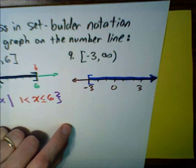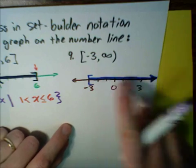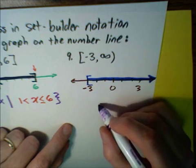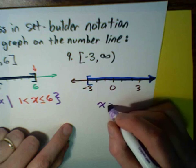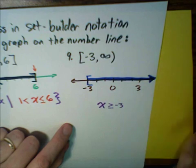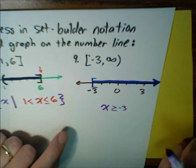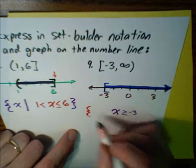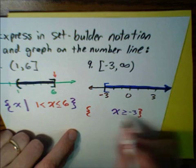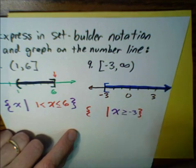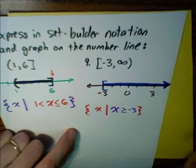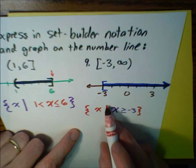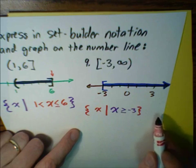Now for the set builder notation, this shaded region represents all the values that are greater than or equal to negative 3. You could just say x is greater than or equal to negative 3 — that's the simple inequality. But they ask us to use set builder notation, which means we need curly braces for the set and a vertical line meaning 'such that.' So our final answer is the set of all values x such that x is greater than or equal to negative 3.